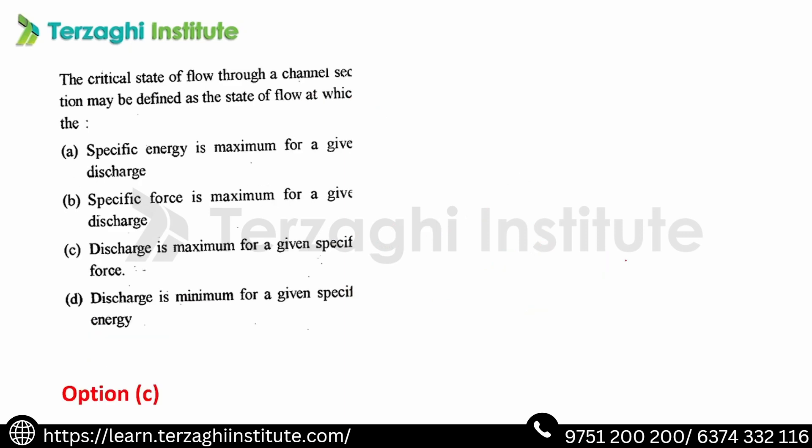The critical state of flow through a channel section may be defined as the state at which specific energy and specific force are minimum for a given discharge, and discharge is maximum for a given specific energy or specific force. So option C — discharge is maximum for a given specific force — is the answer.